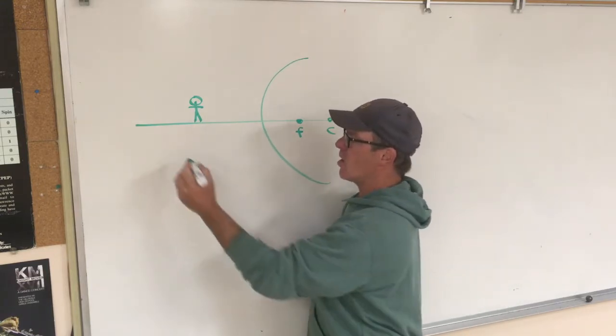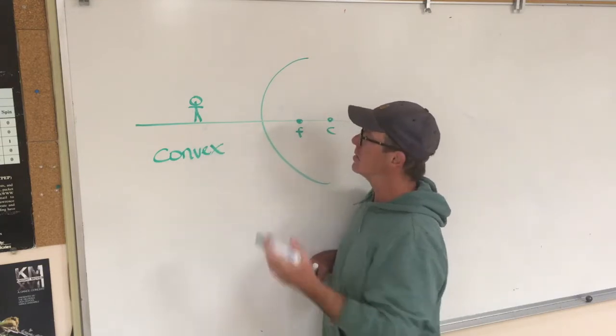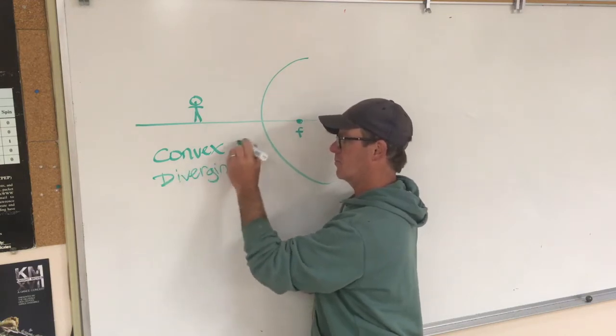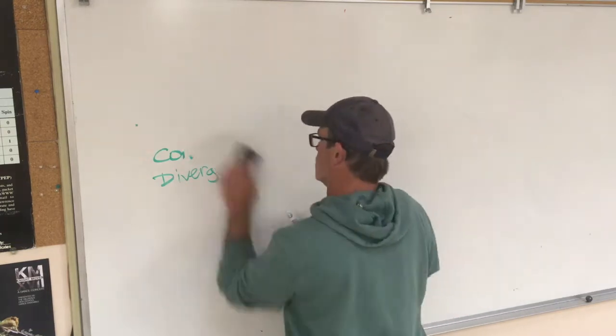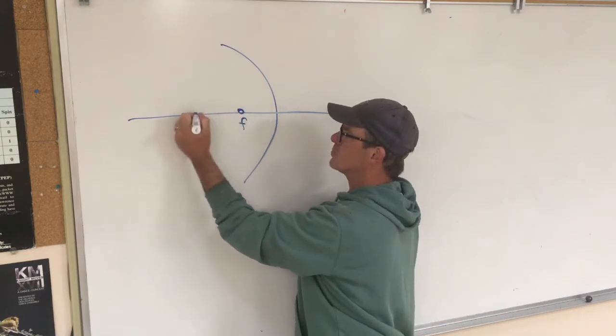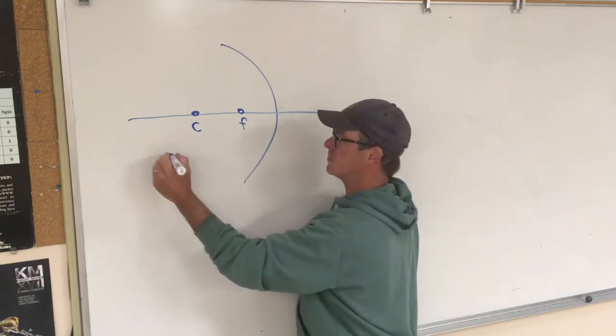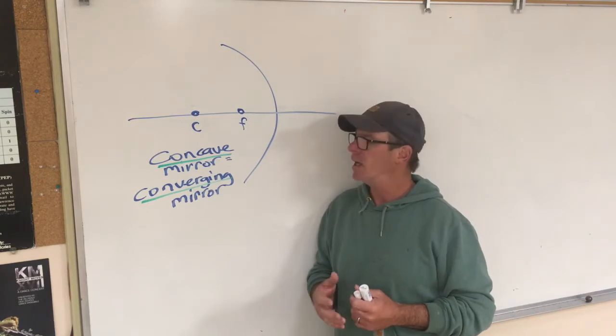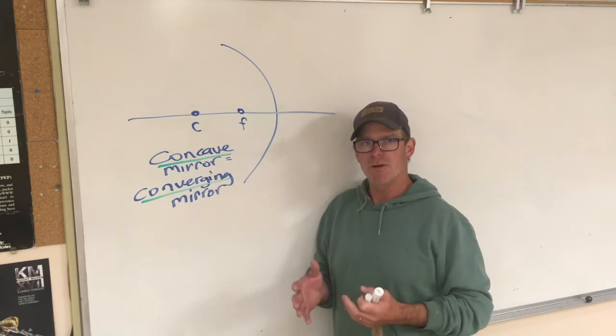A real quick word: the College Board does not typically use terms like convex, they'll use diverging frequently. Likewise, what I typically call a concave mirror they will call a converging mirror. I'd like to move the camera and do the ray diagrams very quickly for you for both mirrors and lenses.